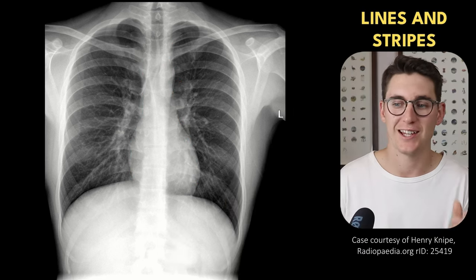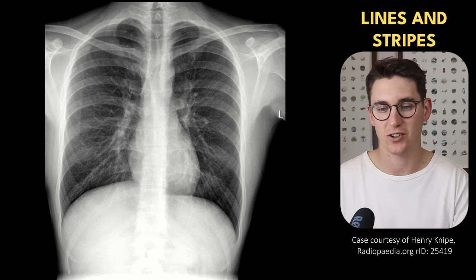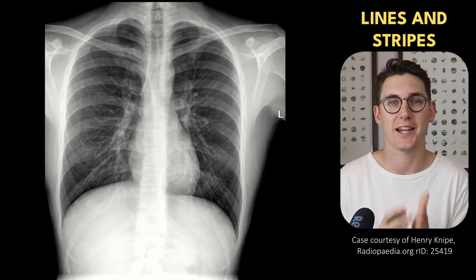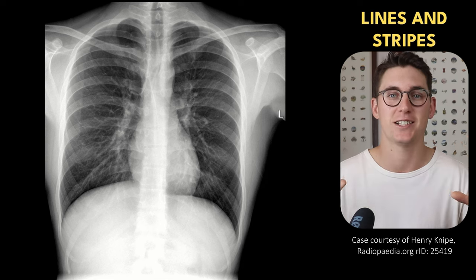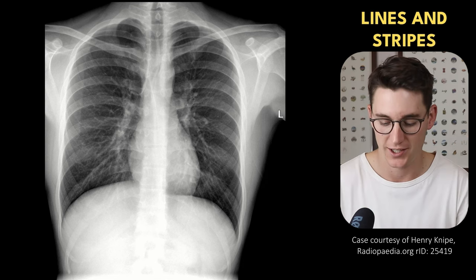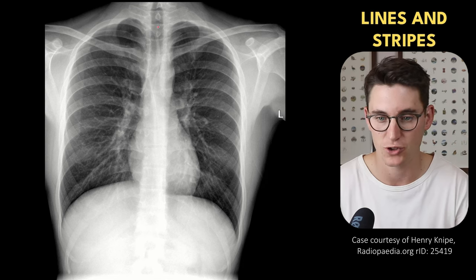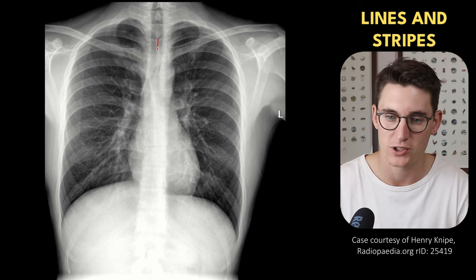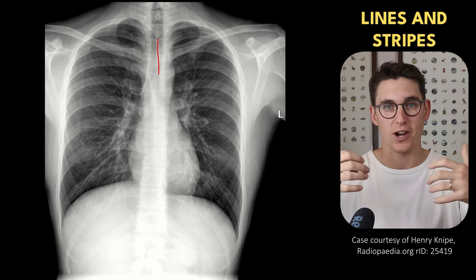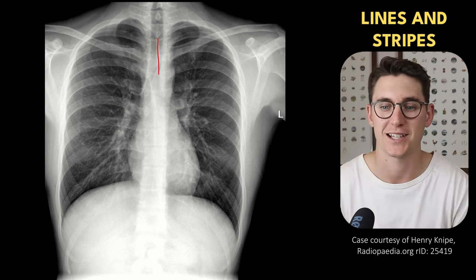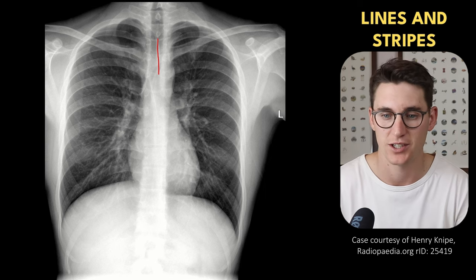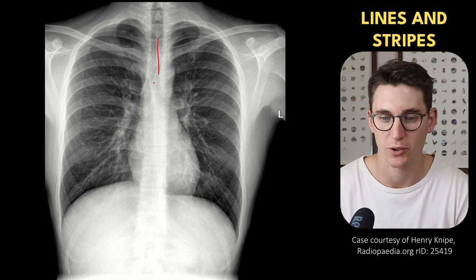Let's move on to the lines and stripes that we can see on this frontal radiograph. A line is a piece of soft tissue that's surrounded by aerated lung and is narrow. Here's an example of a line behind the trachea — you can see this soft tissue line here. This is what's known as our posterior junctional line, where our left and right lungs — the visceral and parietal pleura — abut from the left and right hand side behind the esophagus.